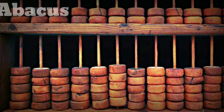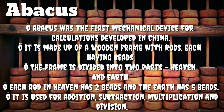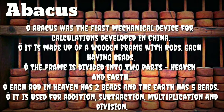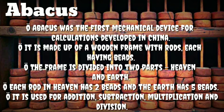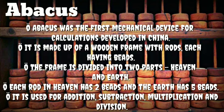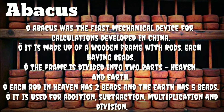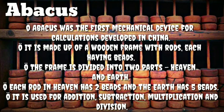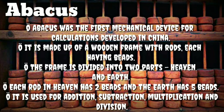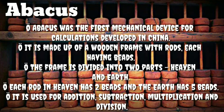Now, Abacus. Abacus was the first mechanical device for calculation, developed in China. It is made up of a wooden frame with rods, each having beads. The frame is divided into two parts: heaven and earth.